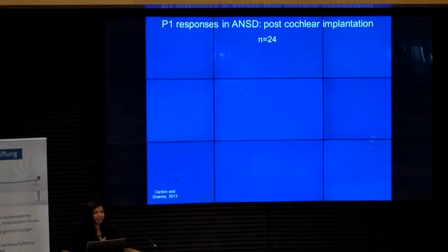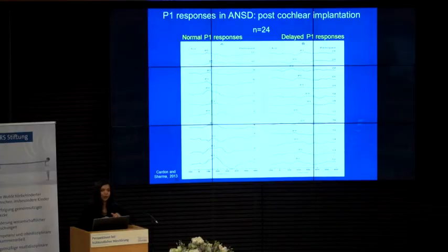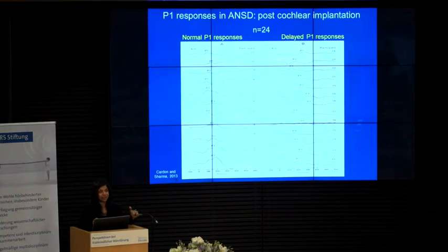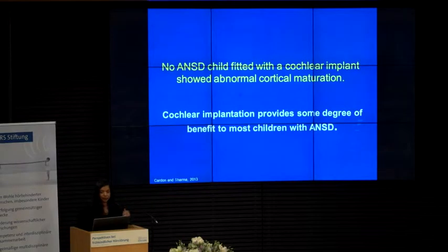That was children with ANSD who had hearing aids. What about children who have cochlear implants? We had three groups — normal, delayed, and abnormal. When children with ANSD get a cochlear implant, we only see two groups. There were no children with severe dyssynchrony deficits after cochlear implantation, which means every child with ANSD benefited with a cochlear implant. They didn't all get normal, but every single child benefited because there were no children with abnormal development. Cochlear implantation provides some degree of benefit to most children.